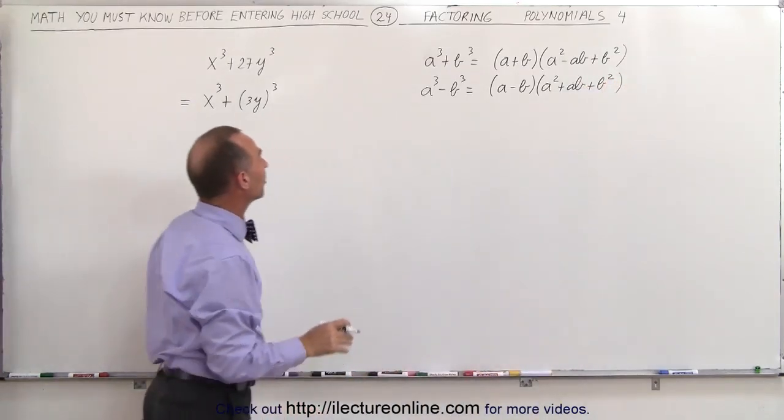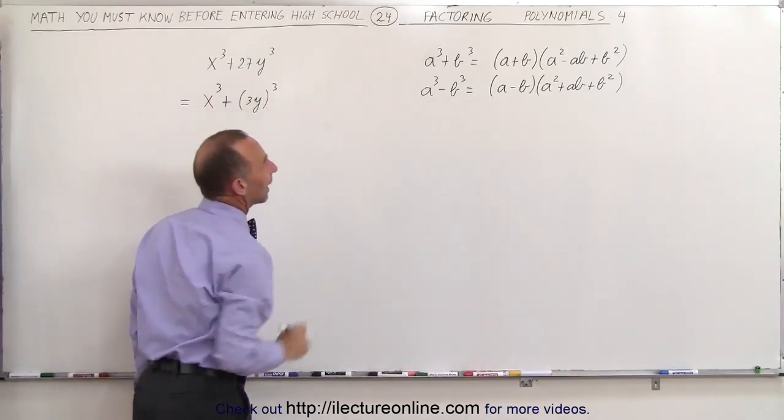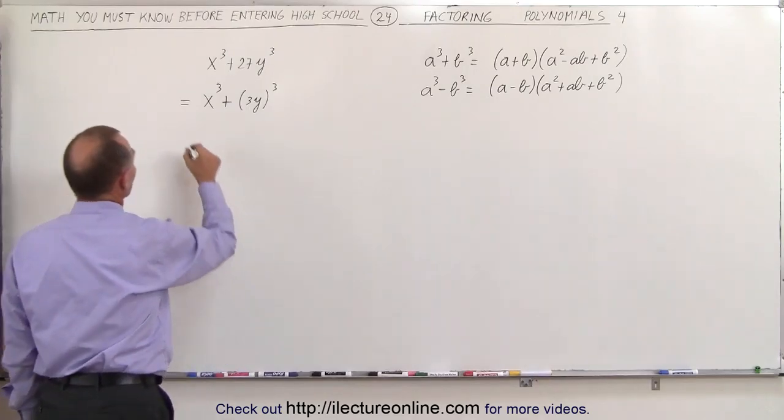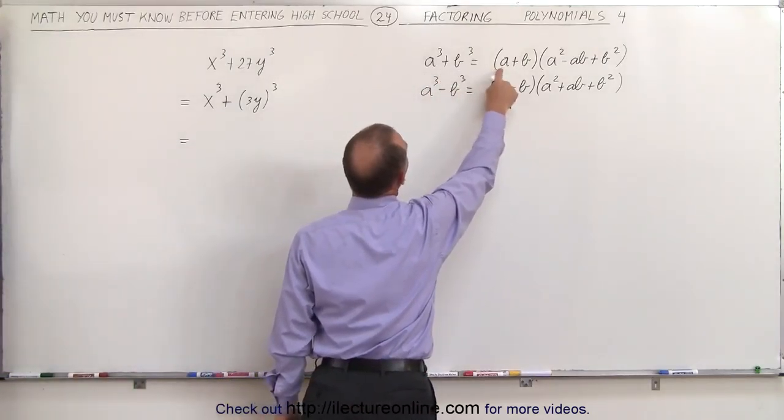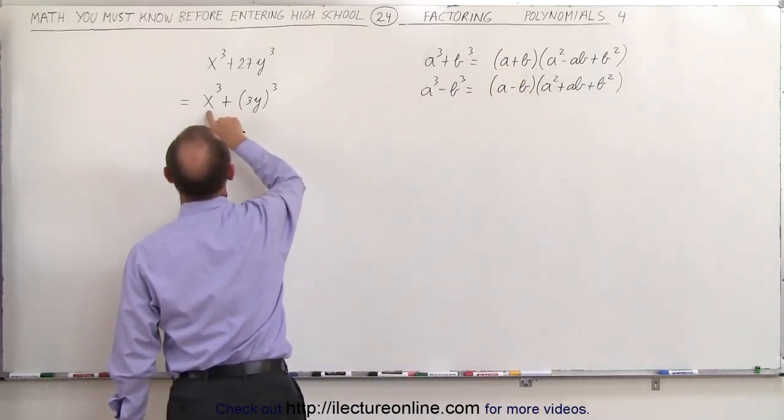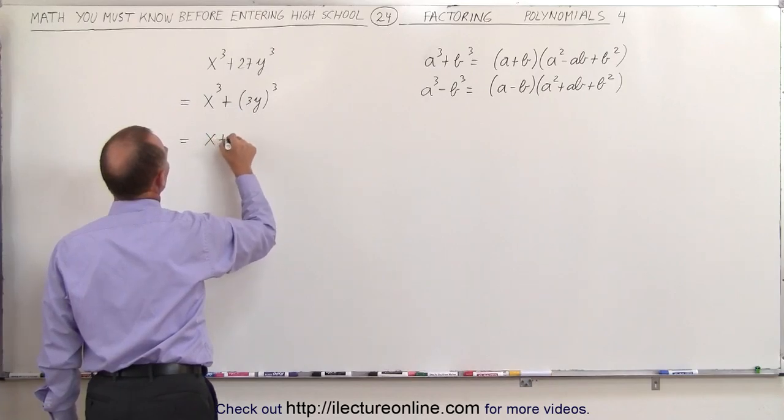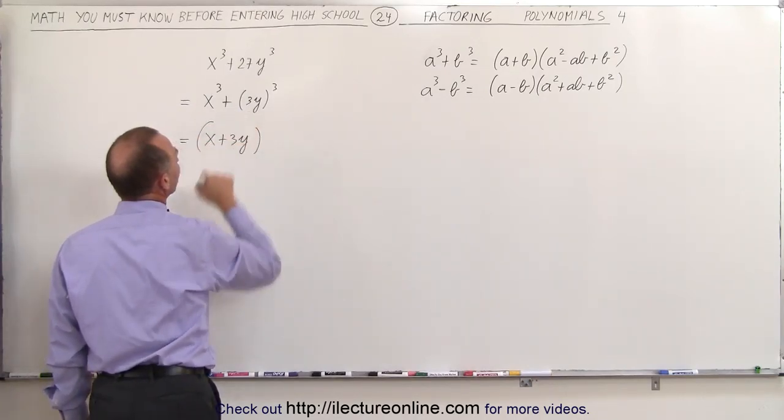So in the same token, when we see something like this, we have to recognize it and we can factor it. This is equal to, since it's the sum of cubes, a plus b. a is x, b is 3y, so this becomes x plus 3y, b being 3y.